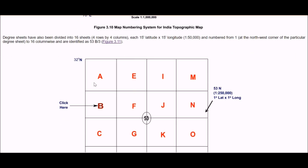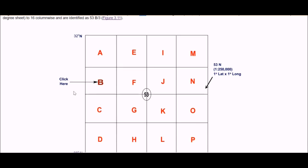Then the data sheets have been divided into 16 sheets, 4 columns by 4 rows and now we have 15 minutes by 15 minutes latitude longitude, that is 1 is to 50,000. We started with 1 is to 10 to the power 6 and now we are on to 1 is to 50,000. These are numbered at 1 at the northwest corner to 16 column wise and are identified as 53B and then object 3.